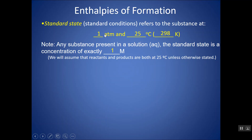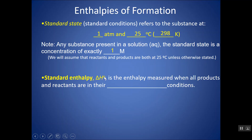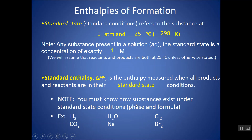You should know what that degree sign means and the conditions that go with it. A lot of tabulated delta H values will have that little degree sign because they're measured at standard state: one atmosphere, 25 degrees Celsius, and one molar for aqueous solutions. You need to know how substances exist under standard state — the phase and the formula. For instance, H2 is a gas, water is a liquid, CO2 is a gas, metals like sodium are solids except mercury, bromine is a liquid, and for the halogens: fluorine and chlorine are gases, bromine is a liquid, and iodine is a solid — but they're all diatomic.